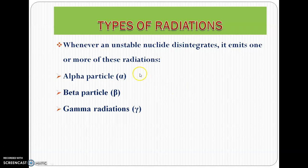Hi, this is Doug Martin and I welcome you to today's video, which is particularly on types of radiations that are radiated when an unstable nucleus decays. In the previous video we looked at the ratios of a stable and unstable nucleus. We also looked at the nature of radiations, and now today in this video we're going to look at types of radiations.